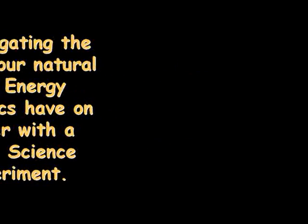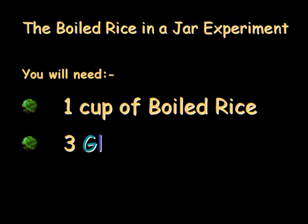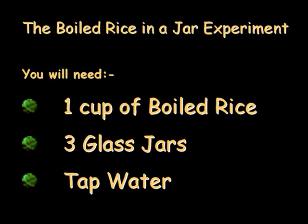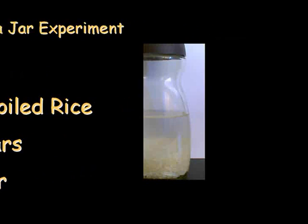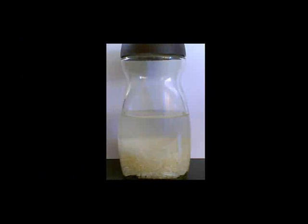Simply take 1 cup of boiled rice, 3 glass jars, and some tap water. Place an even amount of boiled rice in each jar and then fill the jar with tap water to two-thirds full. Place the lid on tightly.